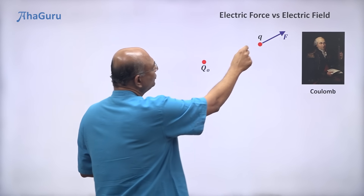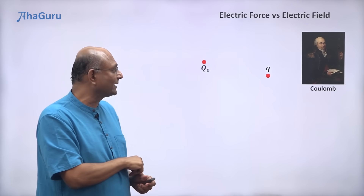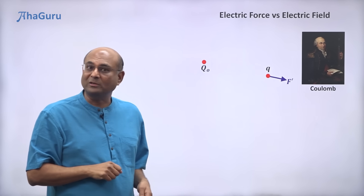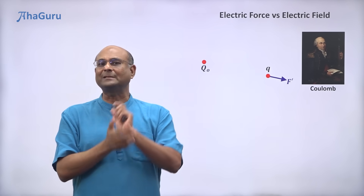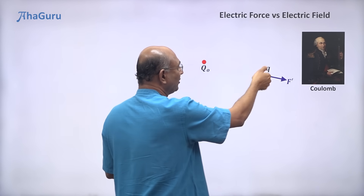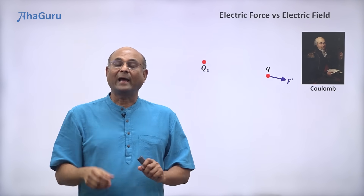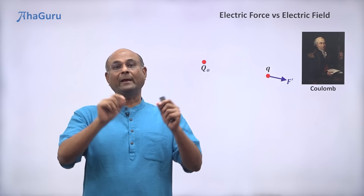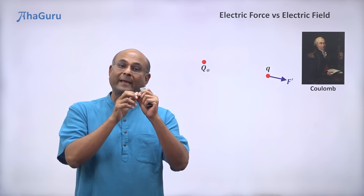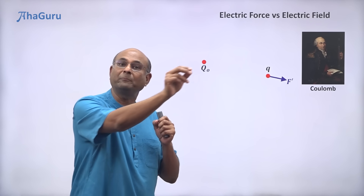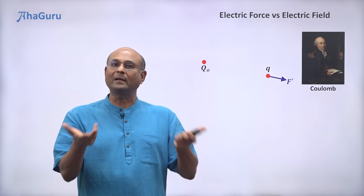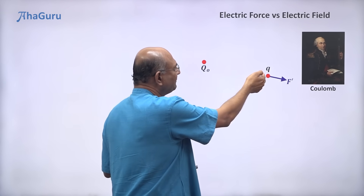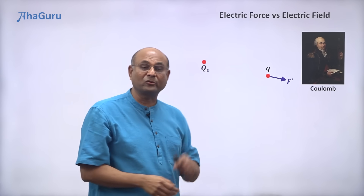Suppose I took this Q and I moved it to a new position — will the force be the same? No. It's going to be a new force that's going to act on small Q. Coulomb was very comfortable with this idea: as I change the position of small Q, the force changes. After all, if you think about Newton's law of gravitation, the same idea works there. G M1 M2 by R square — if I kept M1 fixed and moved M2 to different locations, the force on M2 will change. So there is no difference between that idea and the fact that if I move Q around, the force on small Q changes.